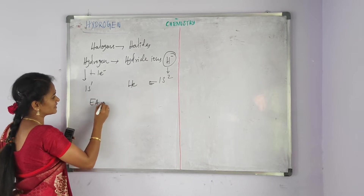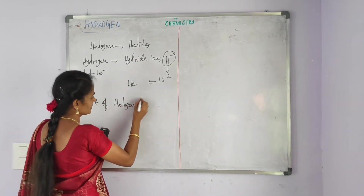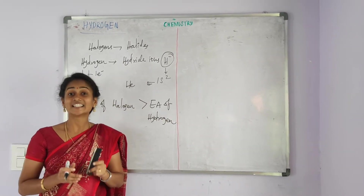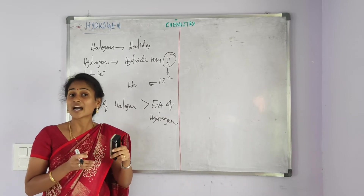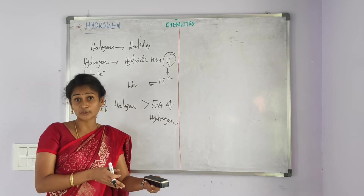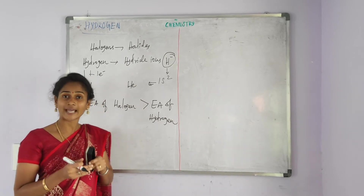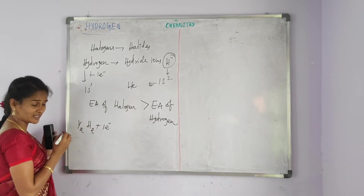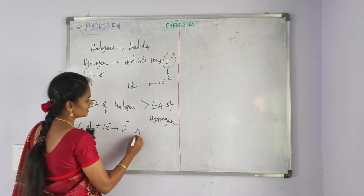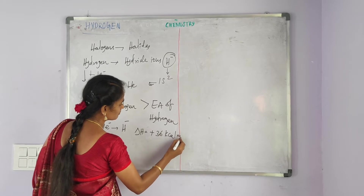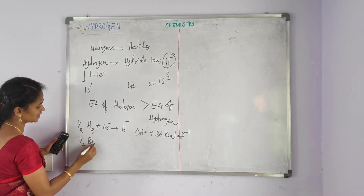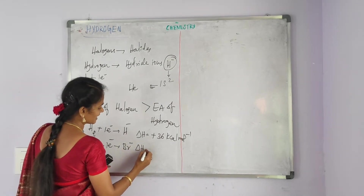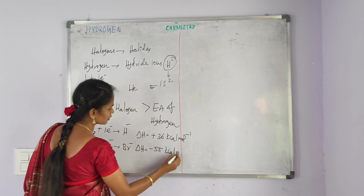The electron affinity of hydrogen is less than the electron affinity of halogens. That is, the tendency of converting hydrogen into hydride ion is very low compared to the tendency of converting a halogen into a halide ion. For example, half mole of hydrogen accepts one electron and is converted into hydride ion with ΔH = +36 kcal mol⁻¹. Half mole of bromine gains one electron and is converted into bromide ion with ΔH = −55 kcal mol⁻¹.